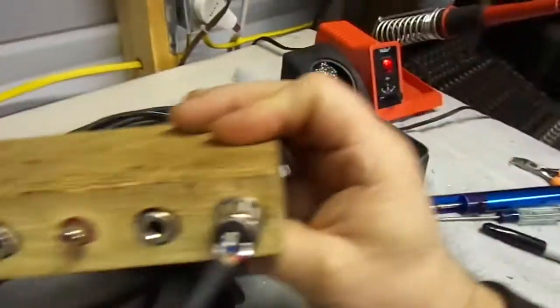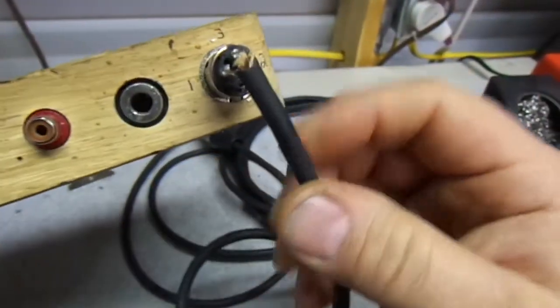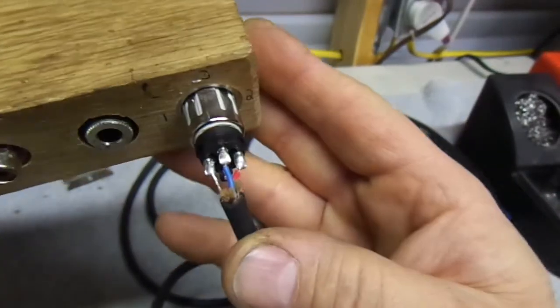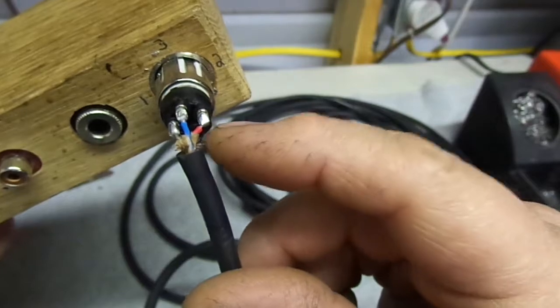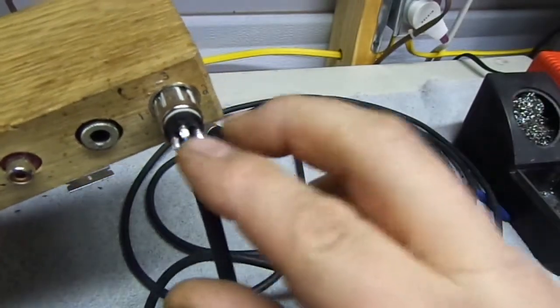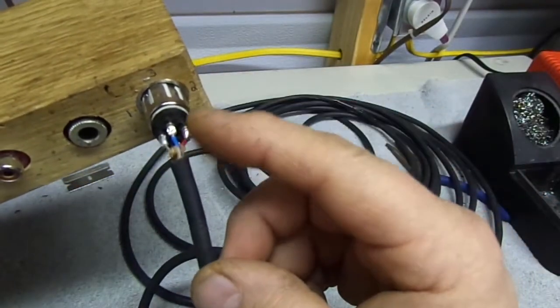So, what we want to do, let's see if I can get this in here close, is we actually want to come in here, and we're going to take pin 2 over here, and desolder it, desolder pin 3, and swap pin 2 and 3. That's what we want to do.